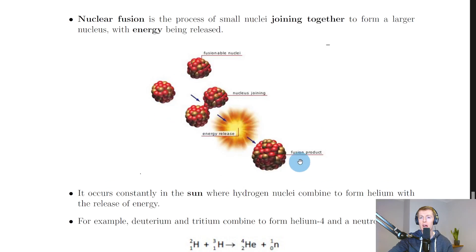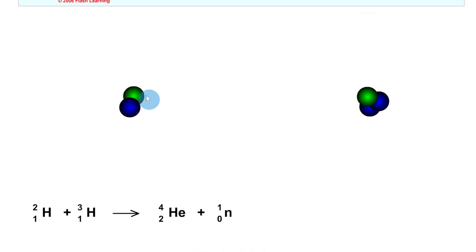can fuse together and that forms something called a fusion product, and energy is released in this process. I'll just show you a quick simulation to help you visualize this. So here we have two nuclei: hydrogen-2 and